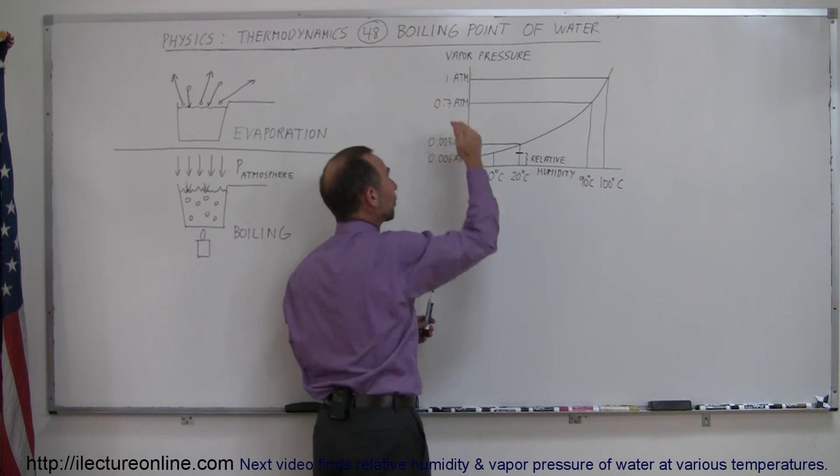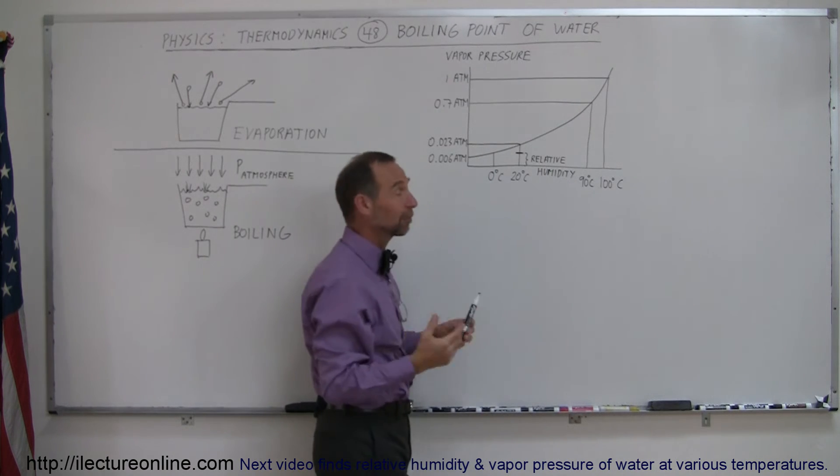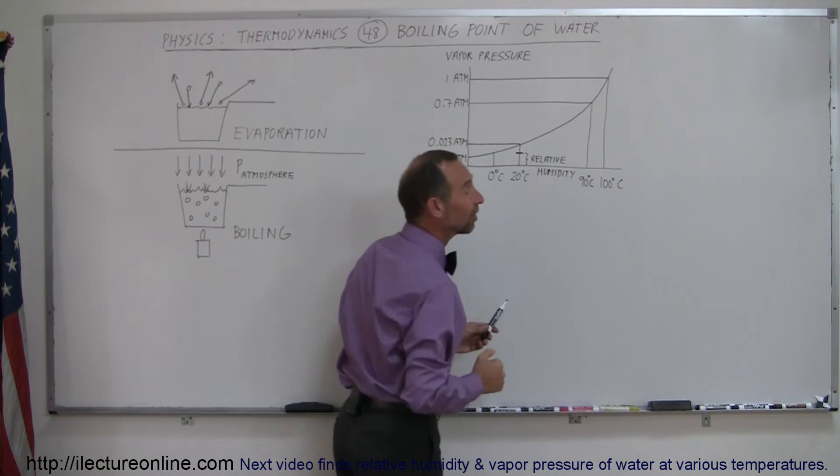At our current 1 atmosphere of atmospheric pressure, which is normal atmospheric pressure on Earth, the temperature needs to be 100 degrees centigrade.